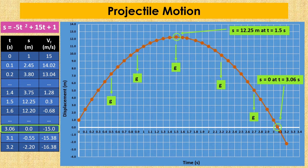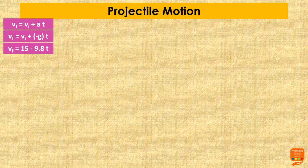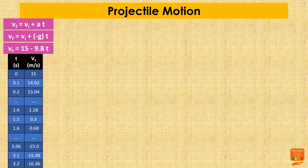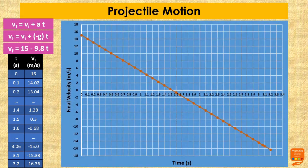Now let's plot a graph between time and final velocity to understand how velocity changes. Using Vf = Vi + acceleration × t, substituting the values gives Vf = 15 - 9.8t. Using different values of time, we can see that final velocity constantly decreases. At t = 3.06 seconds when the ball touches the ground, the final velocity is approximately -15 meters per second. So the velocity went from +15 m/s at t = 0 to -15 m/s just before impact.